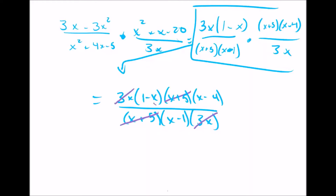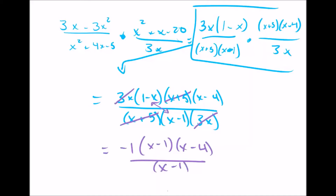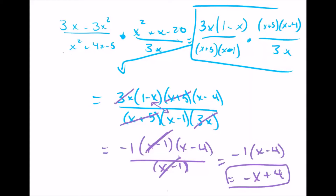So 1 minus x and x minus 1 are very similar — they're just flipped. If we want to change 1 minus x to x minus 1, all we need to do is take out a negative 1, and it actually changes to x minus 1. If you multiply a negative 1 into this, then you have positive 1 minus x — they're the same. Now that I made them the same, I can cross them out, and I'm left with negative 1 times x minus 4, which gives negative x plus 4. That's the answer in simplified form.